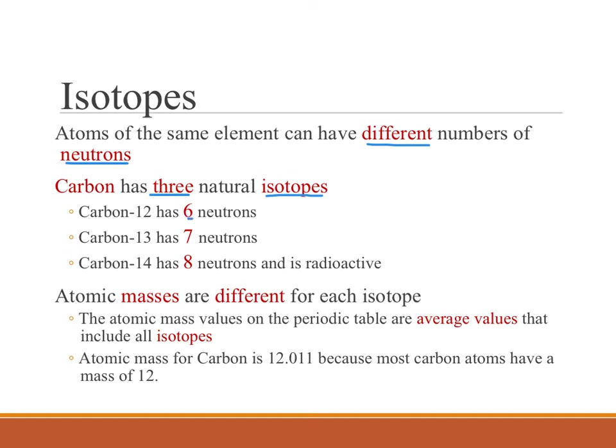For example, carbon has three naturally occurring isotopes because isotopes are what we call the same element with different number of neutrons. Carbon-12 has six neutrons, carbon-13 has seven neutrons, and carbon-14 has eight neutrons and is also radioactive.